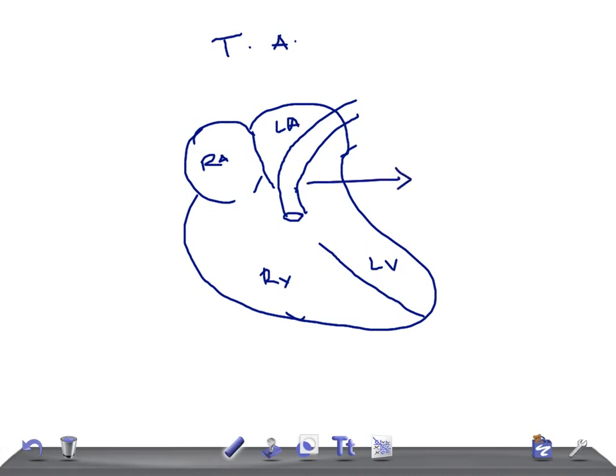What's the pathophysiology? This truncus arteriosus, you can see over here, it overrides the VSD. Truncus overrides the VSD, this is a VSD, and it overrides the VSD.